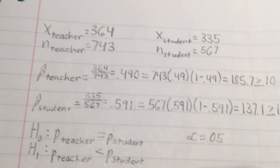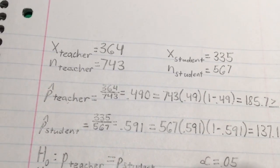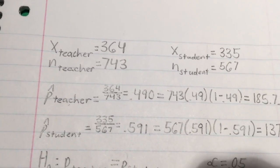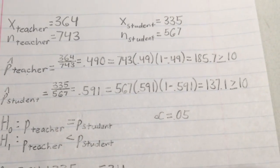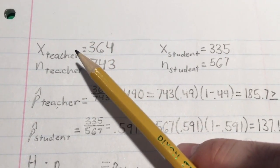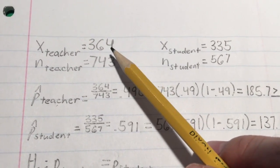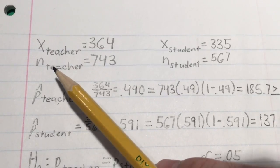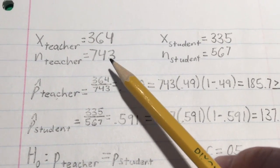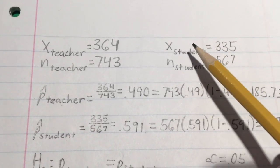Now we first have to verify the requirements to perform the hypothesis test. First, we can reasonably assume that each sample is a simple random sample. Now for the second part, we have the sample of the teacher-centered model: 364 passed out of a population of 743.